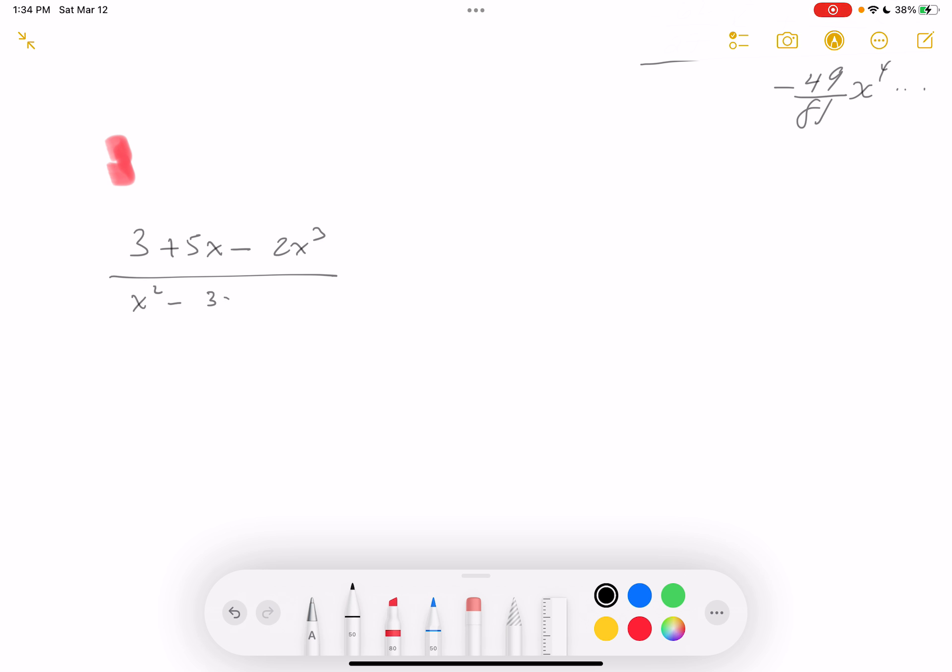To make it a bit simpler, I'm going to factor out an x squared from the bottom and then do my long division. So it's going to be 3 plus 5x minus 2x cubed divided by x squared times (1 minus 3x plus x squared).